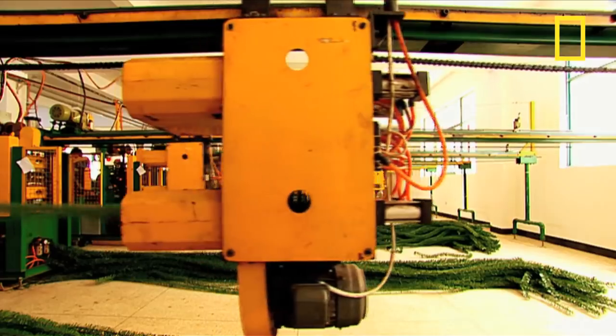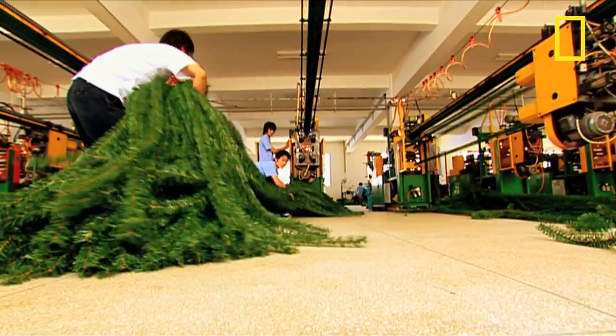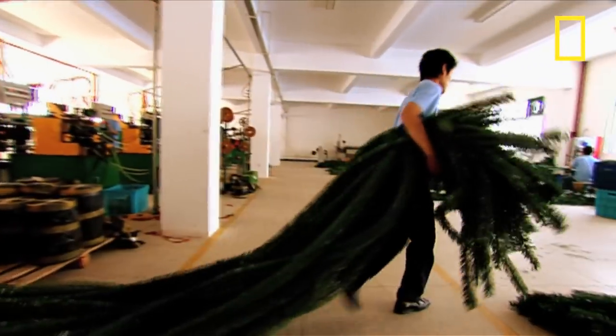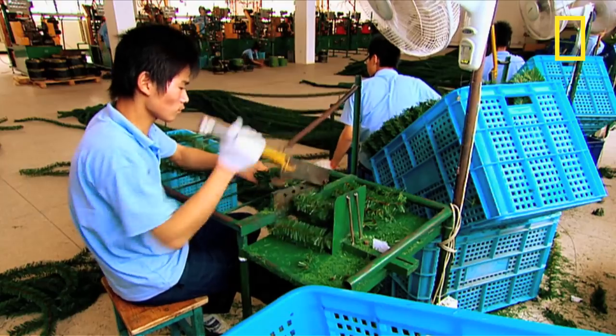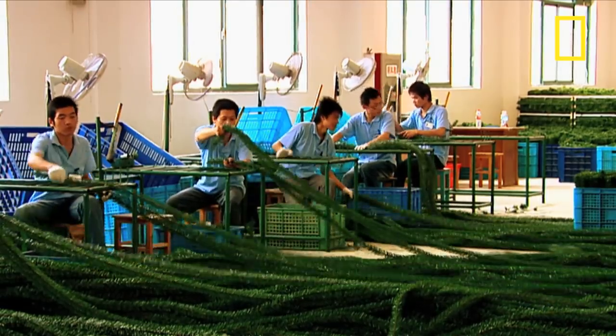These machines produce branches measuring around 6m long. A tree with branches this big isn't very practical, so they're cut to size by hand. They're cut this way because a mechanical cutting machine would flatten the needles back down.